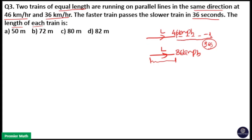So here distance is equal to L plus L, 2L, and speed will be relative speed here because two bodies are moving in same direction. Moving in same direction means 46 minus 36, that is 10 km per hour is the relative speed. That means distance is equal to 2L is equal to speed into time.